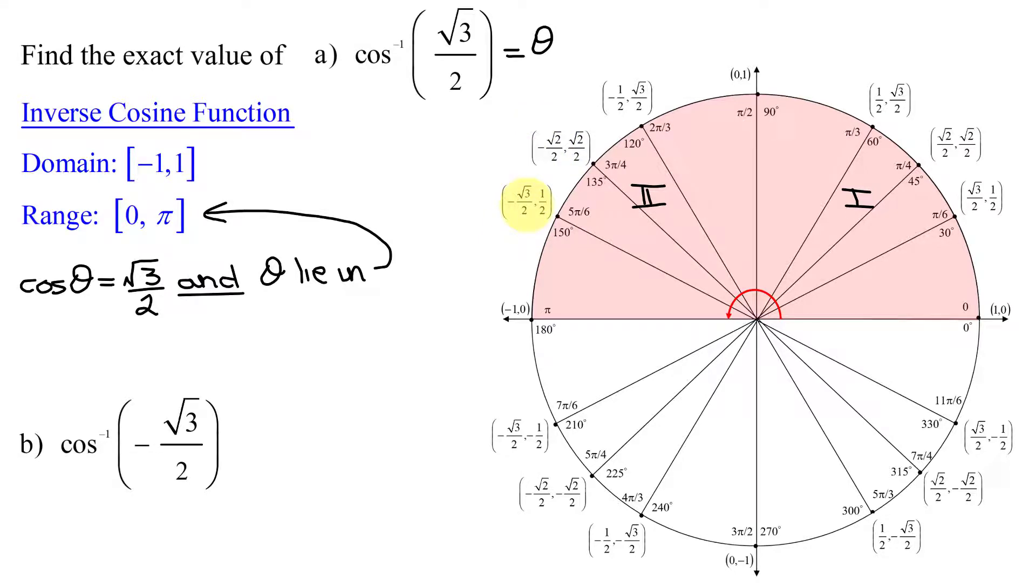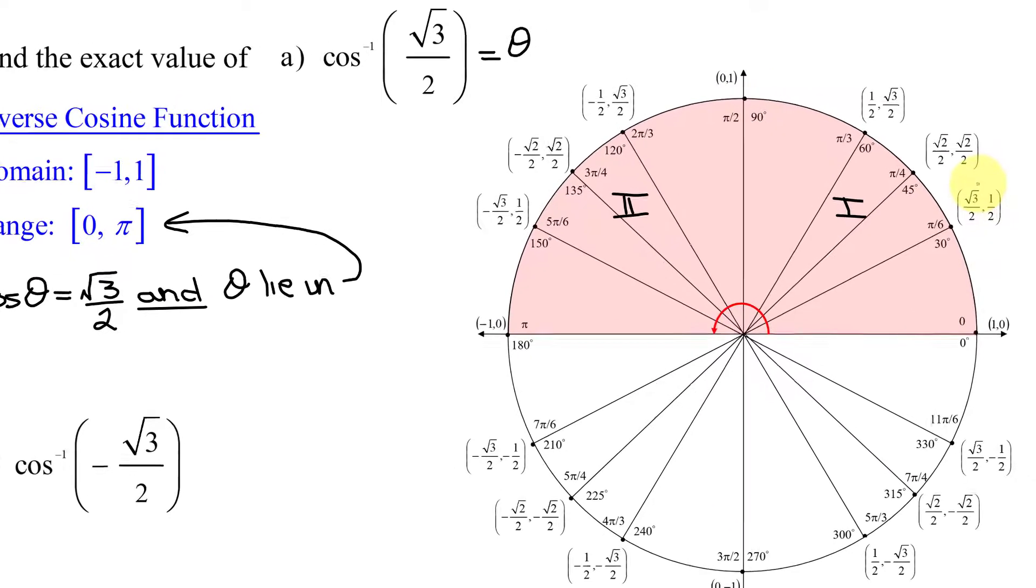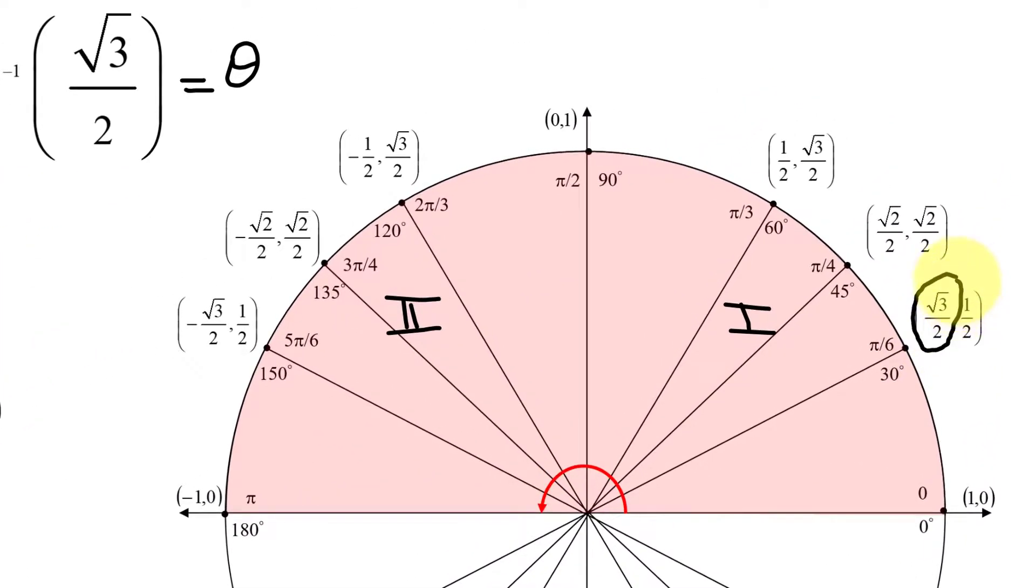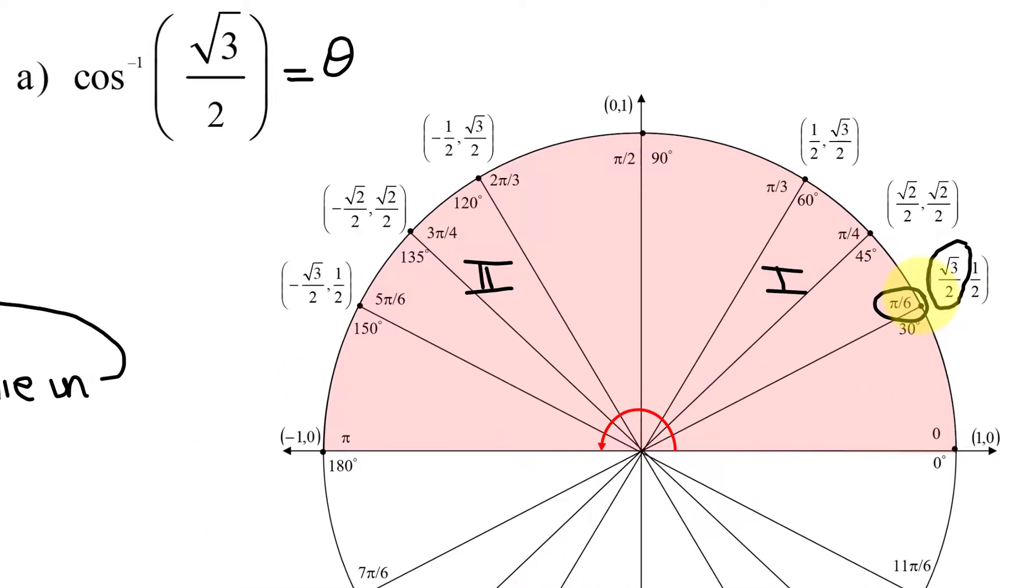So my angle must lie somewhere in quadrant 1. Here is the point whose x-coordinate equals the positive square root of 3 over 2, and this is the angle that produces it.